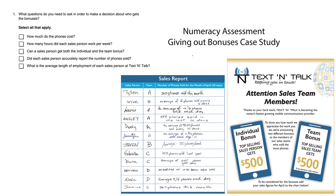For this numeracy assessment case study, 'Giving Out Bonuses,' let's answer question number one: what questions do you need to ask in order to make a decision about who gets the bonuses? Here's the poster — attention sales team members, we want to give an award to the sales teams who sold the most phones. Who cares about what kind of phone or anything else? The number of phones sold is the only thing that matters.